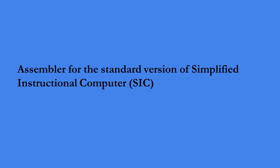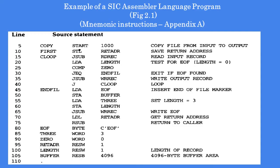In this first part of the video, we will look at the assembler for the standard version of the Simplified Instructional Computer (SIC). The assembler for each architecture will vary. Here we will see how to write assembly code for the SIC computer, which was introduced in Module 1. This is an example SIC assembler language program, taken from Figure 2.1 of the textbook, using mnemonic instructions from Appendix A.